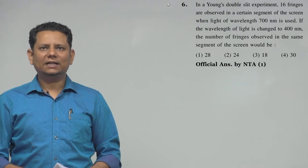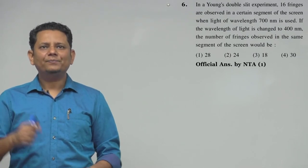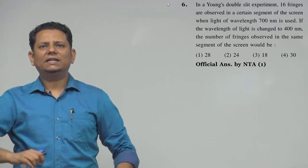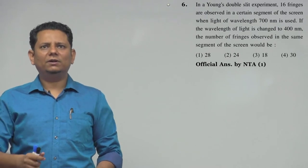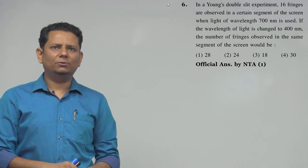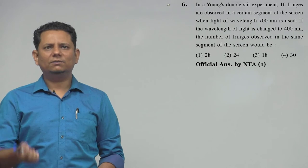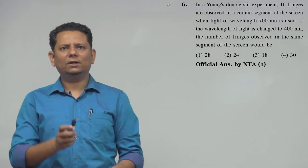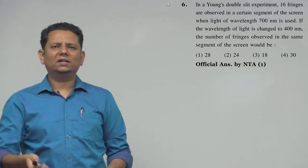Next question. In a YDSC setup, 16 fringes are observed at a certain segment of screen when light of wavelength 700 nanometer is used. If the wavelength of light is changed to 400 nanometer, the number of fringes observed in the same segment of the screen would be. We have 4 options: 28, 24, 18, and 30.